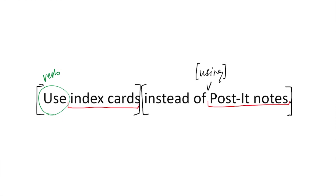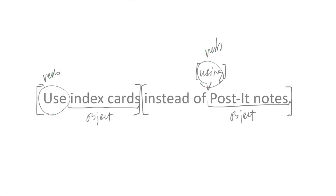Now that we have our two clauses, we can identify the objects of both verbs. In the first case, it's index cards, and in the latter case, it's post-it notes. This sentence is an example of a new mood that we haven't yet discussed, so I'd like to take a moment to go over the different types of moods sentences can have.